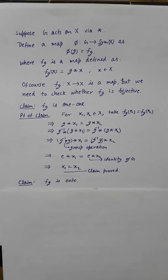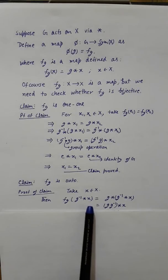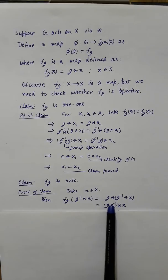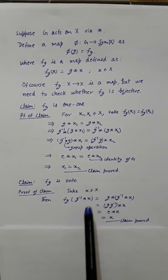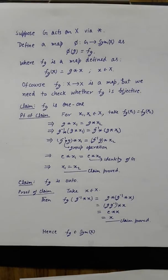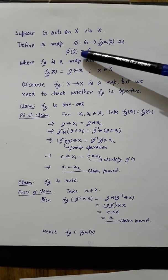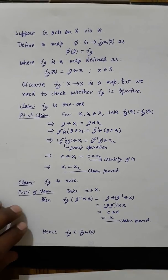Now we show fg is onto. Take any x in X; the pre-image of x is g-inverse ★ x, since fg(g-inverse ★ x) = g ★ (g-inverse ★ x) = e ★ x = x. So given any element in X we found its pre-image, meaning fg is onto. Therefore fg is bijective and belongs to Sym(X), confirming our map φ from G to Sym(X) is well-defined.